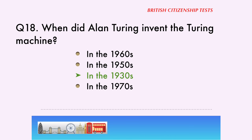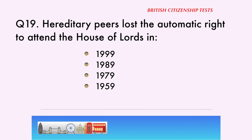Question 19. Hereditary peers lost the automatic right to attend the House of Lords in: 1999, 1989, 1979, 1959. The correct answer is: 1999.